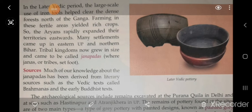What are the sources from where we will get the information? From the Vedic texts called Brahmanas, or the early Buddhist texts — these are the important sources.